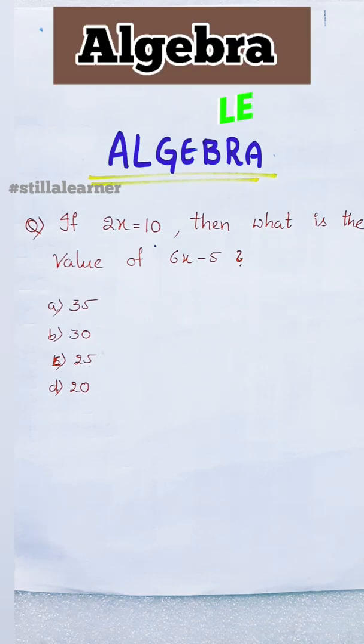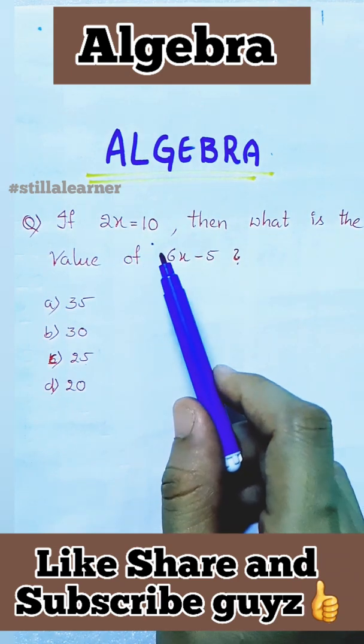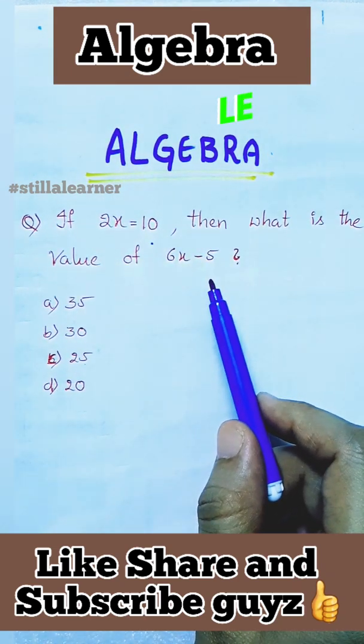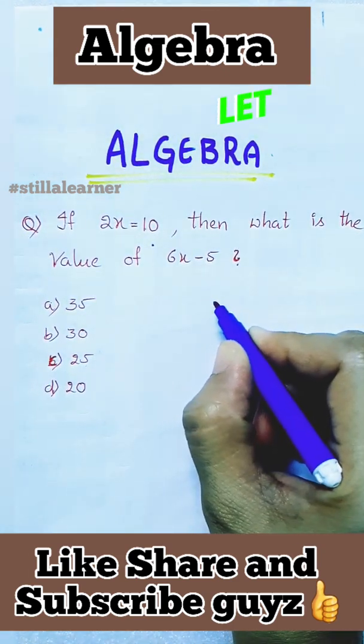Good morning, so today we will see an algebra question. The question is: if 2x equals 10, then what is the value of 6x minus 5? So first we have to take out the x value.